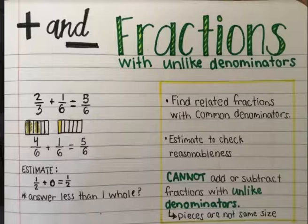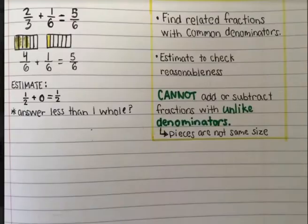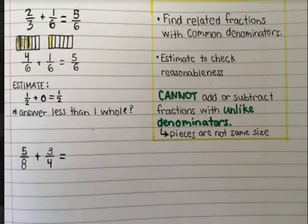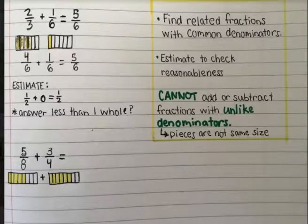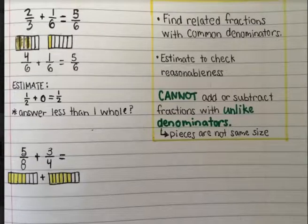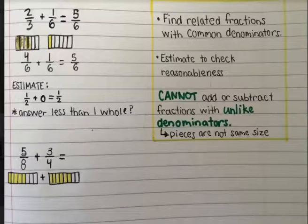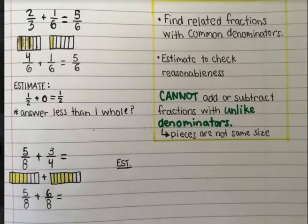Let's take a look at a second example. In this example, we have five eighths and we're adding three fourths to it. Again, we first want to start with our model. I've modeled five eighths, and we had three fourths, but I have already partitioned those fourths into eighths. And so I can see here that three fourths is equivalent to six eighths. So I can rewrite the same equation as five eighths plus six eighths.